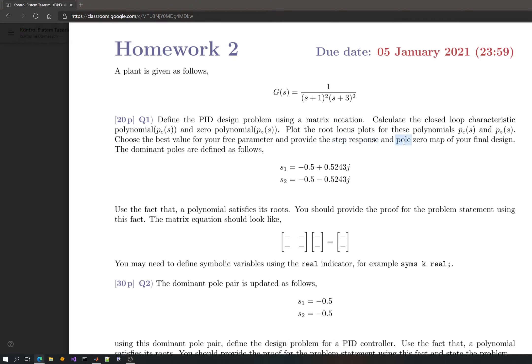Looking at these root locus plots, you can choose the free parameter so that you have a good setup in terms of dominant pole placements. Then provide the step response and pole zero maps for your final design. So basically the steps are to define the PID design problem in this matrix notation, then solve for these two controller parameters, and then define the characteristic polynomial and the zero polynomials.